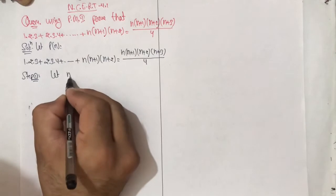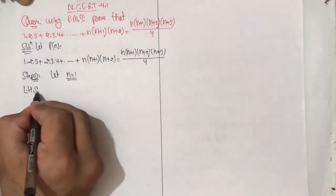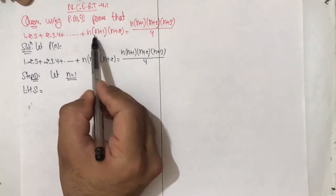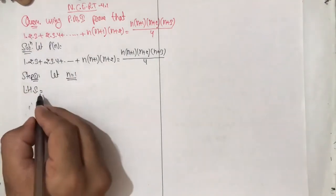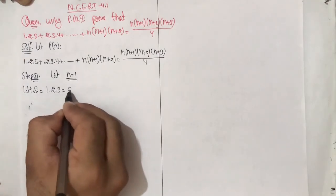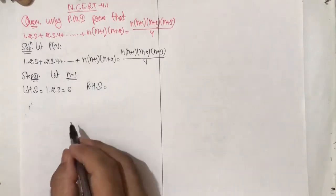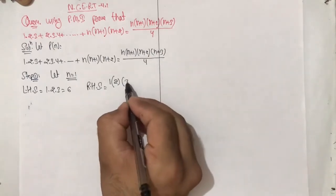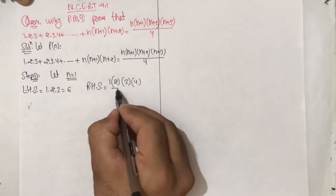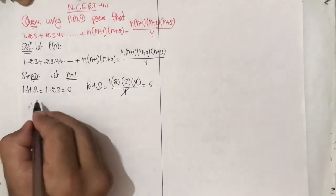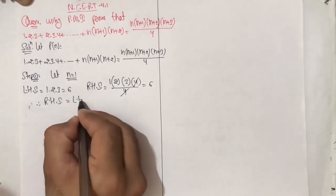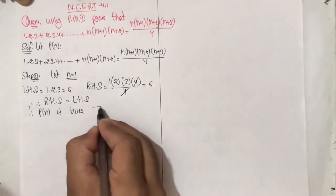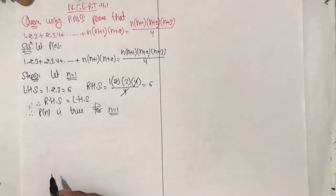Step 1: Let n = 1. Left hand side: putting n = 1, we get 1·2·3 = 6. Right hand side: putting n = 1, we get 1·2·3·4 / 4 = 6. Therefore RHS = LHS. Hence P(n) is true for n = 1, meaning P(1) holds.